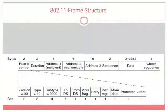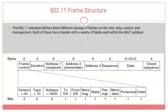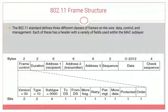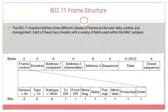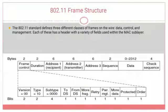The 802.11 frame structure consists of three different classes of frames on the wire: the first is data, the second is control, and the third is management. Each of these has a header with a variety of fields used within the MAC sublayer. Normally we transmit data, but sometimes we also need to transmit control and management frames. Those three classes of frames on the wire are defined by using the frame structure.